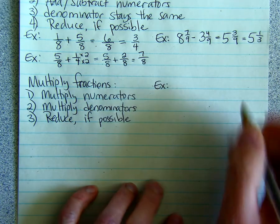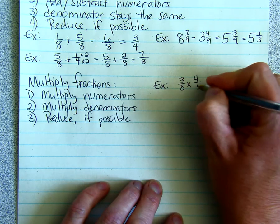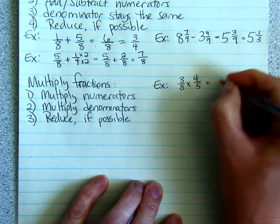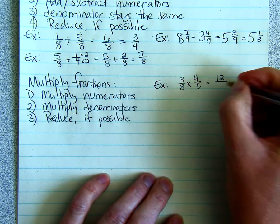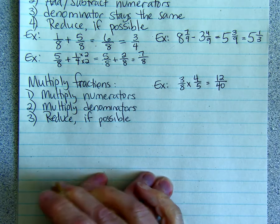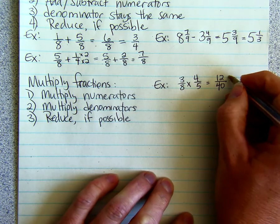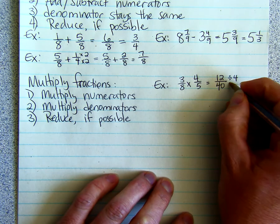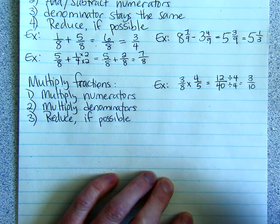So here's an example. Let's multiply 3 eighths and 4 fifths. So we multiply the numerators. 3 times 4 is 12. We multiply the denominators. 8 times 5 is 40. Then we reduce if possible. We can divide both of these, the 12 and the 40, by 4. And we get 3 tenths.